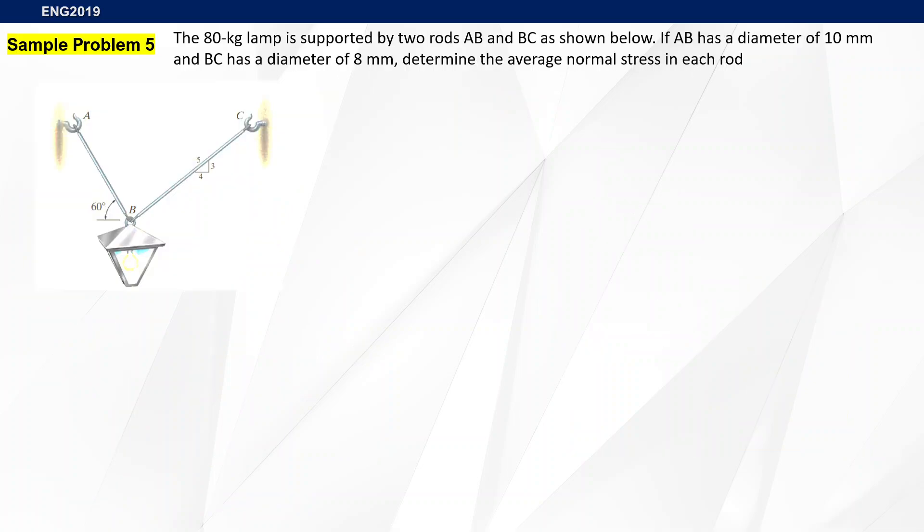Let's try a different one. We have an 80 kilogram lamp supported by two rods, AB and BC, shown below. If AB has a diameter of 10 millimeters and BC has a diameter of 8 millimeters, determine the average normal stress in each rod. We need to find the average normal stress for rod AB and rod BC.